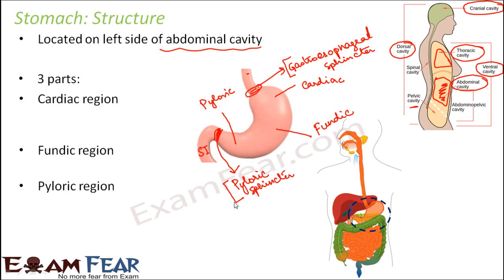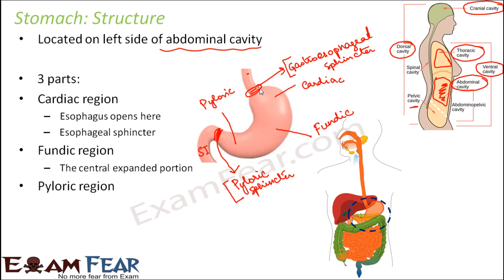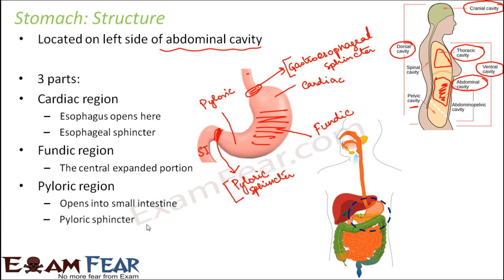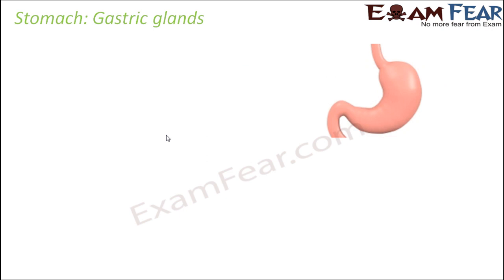The cardiac region is the area where the esophagus opens through the gastroesophageal sphincter. The fundic region is the central expanded portion. The pyloric region is the terminal part of the stomach which opens into the small intestine through the pyloric sphincter. Now we will talk about gastric glands — specialized glands present inside the stomach whose secretions are important for the process of digestion.